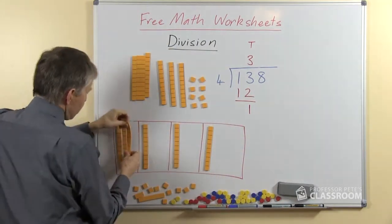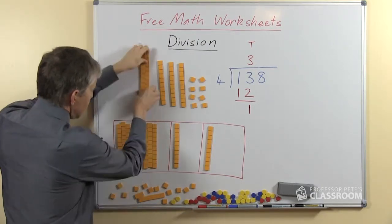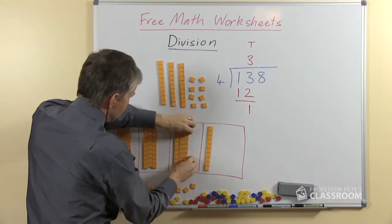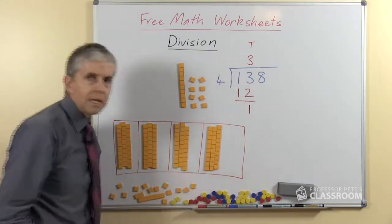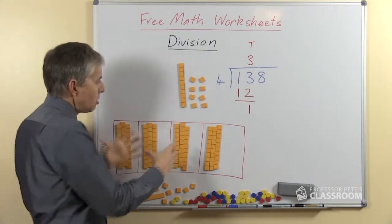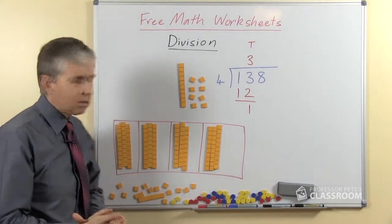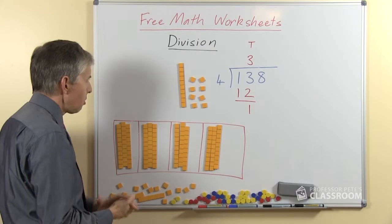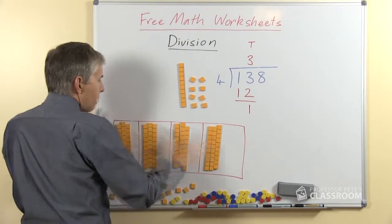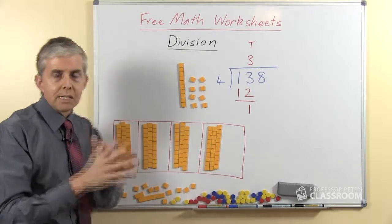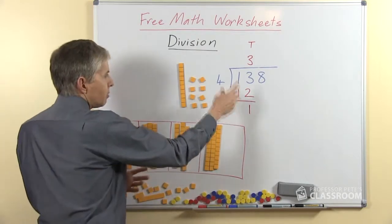So we should be able to put 3 tens into each part of the mat. Now this part down here, if you're going to do this with physical base-10 materials, I recommend you use some plastic containers that are the right size, something like Chinese takeaway meal containers. So this is illustrating that part of the process. Everybody gets 3, 4 threes is 12. How many are left? We had 13 to start with, we've got 1 left.